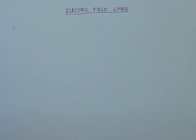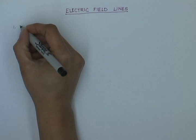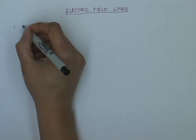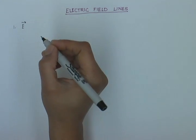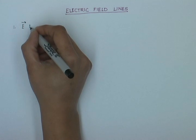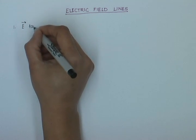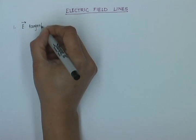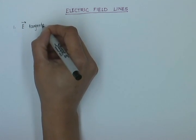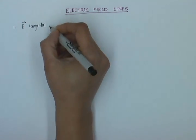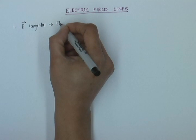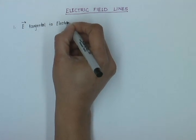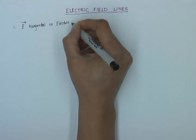The first rule is that the electric field lines must be drawn such that the electric field vector is tangential to the electric field line at every point. So E is tangential to the electric field lines at each point.